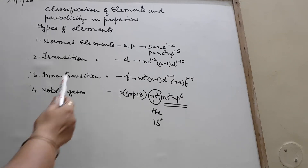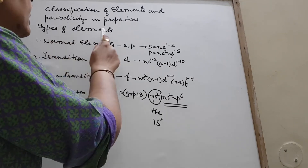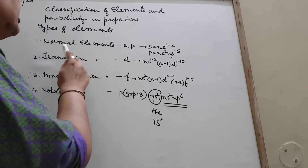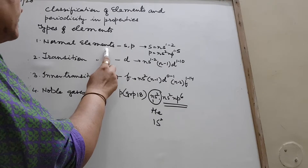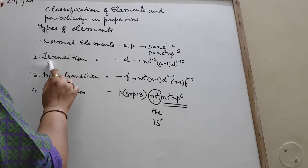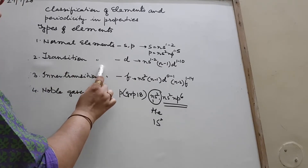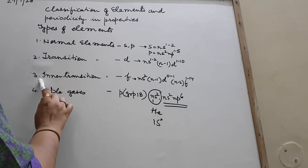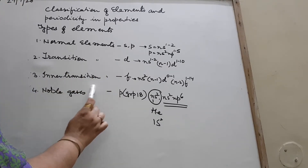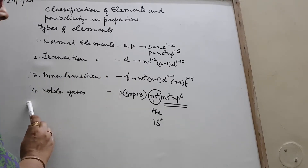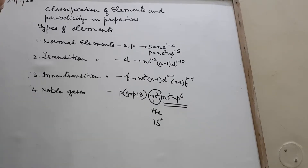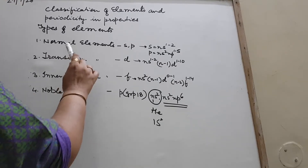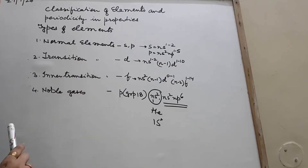Now children, we will study types of elements. The first is normal elements, number two transition elements, number three inner transition, and number four noble gases. So first we will take up normal elements.